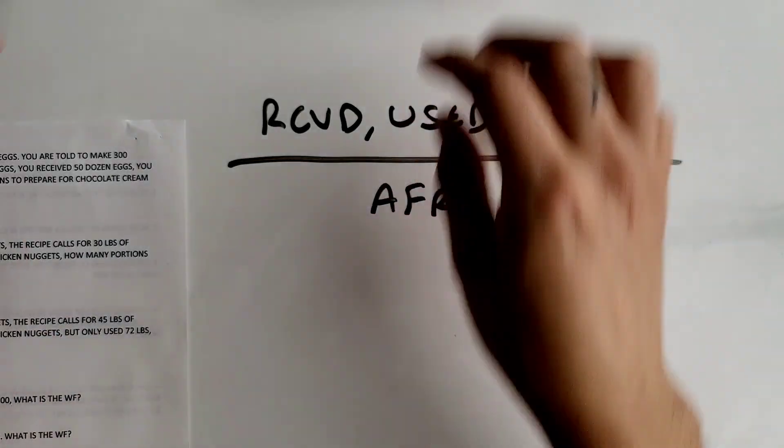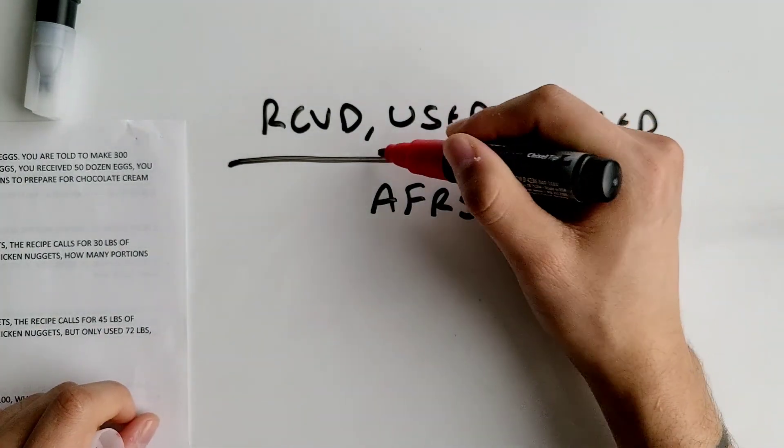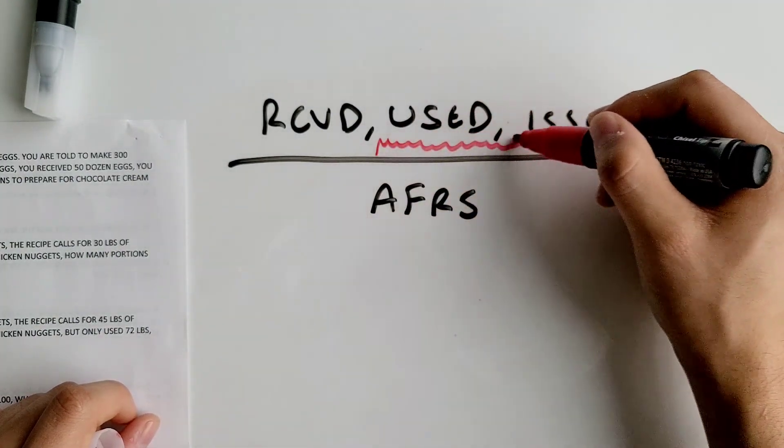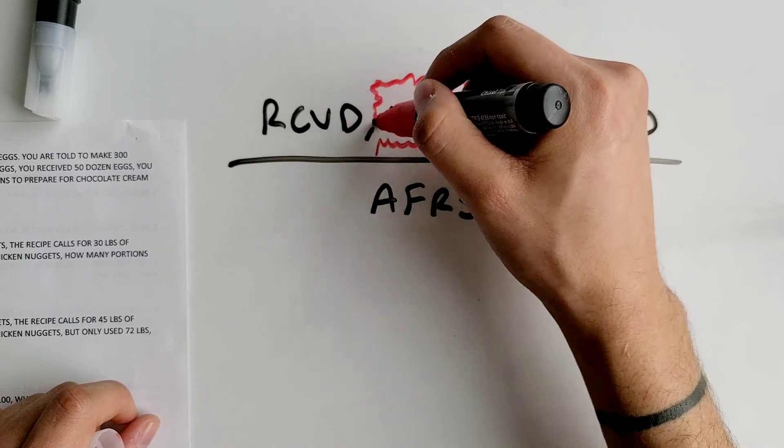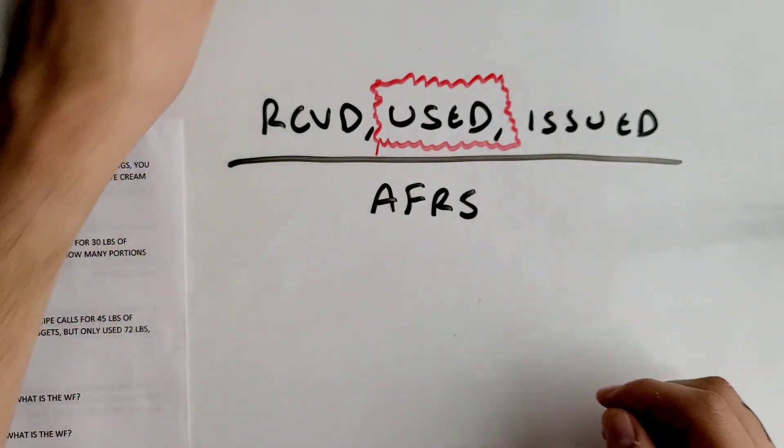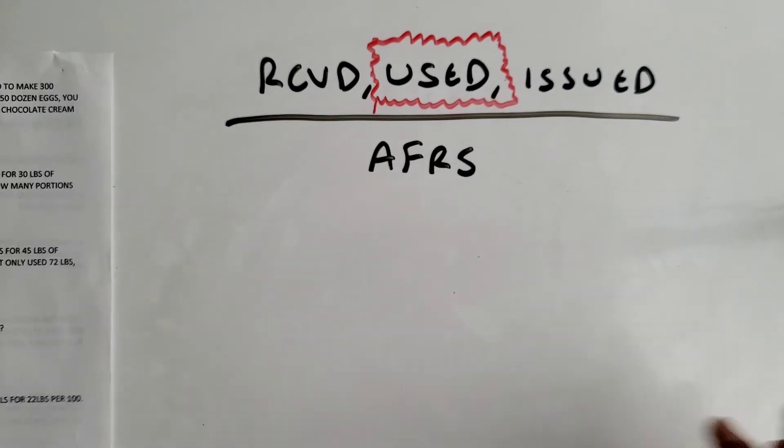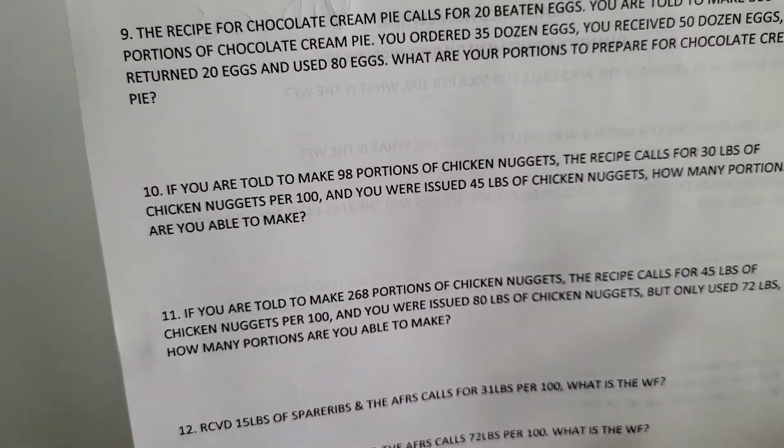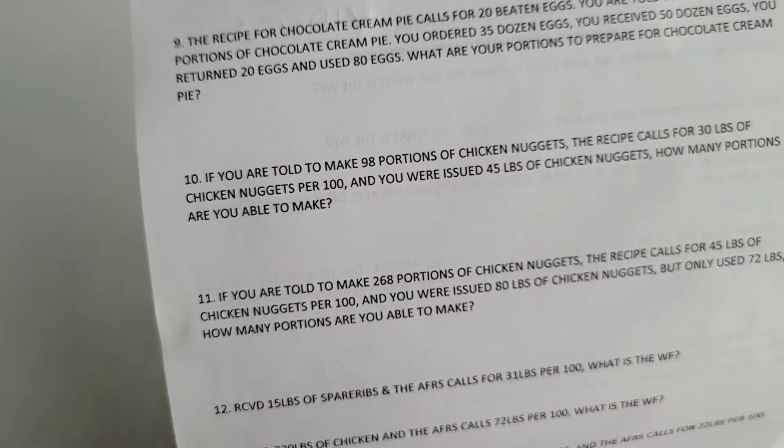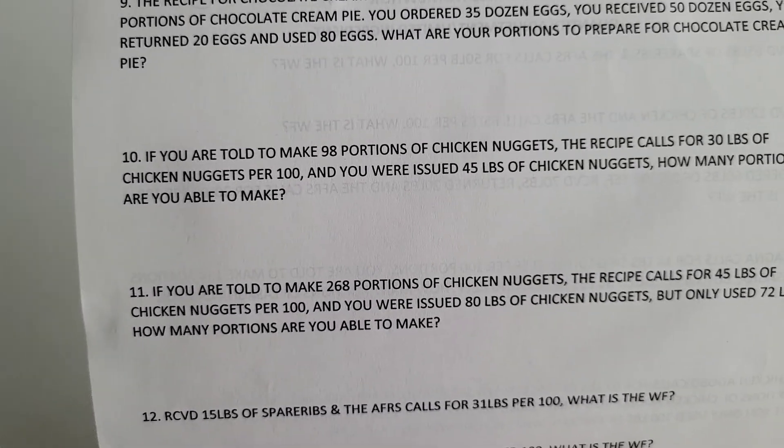You want to focus on the word 'used.' Look out for this word when you're reading these problems for your limited ingredient ones. Again, it says you're told to make 268 portions of chicken nuggets, the recipe calls for 45 pounds of chicken nuggets, you're issued 80 pounds but only used 72 pounds.